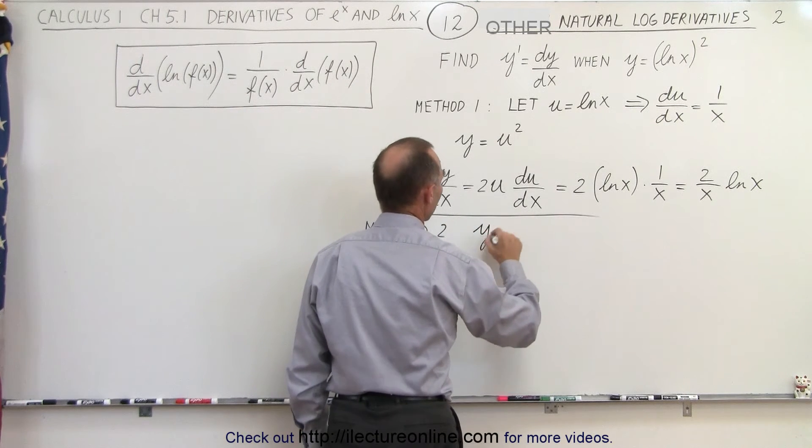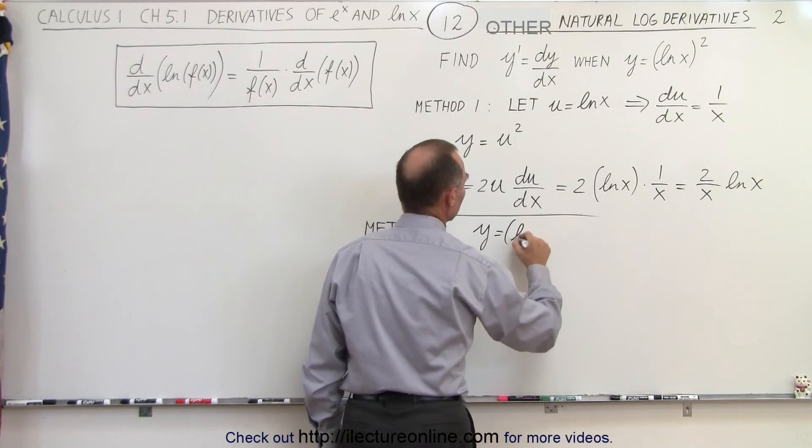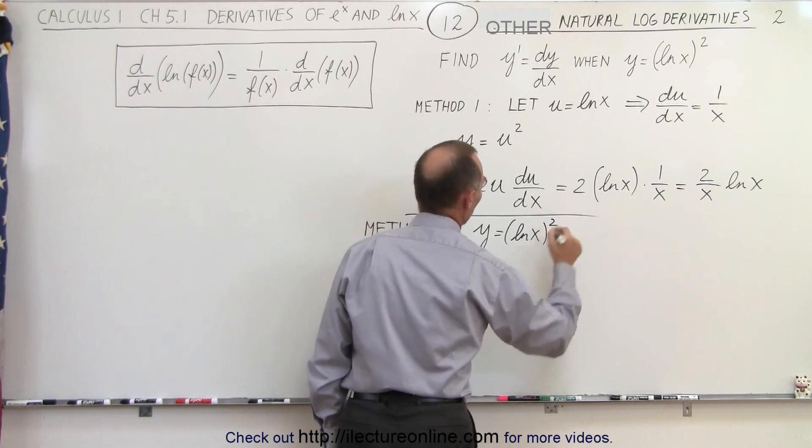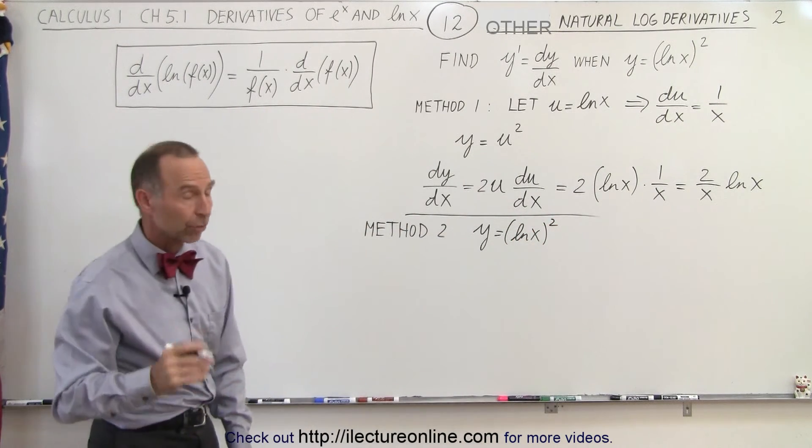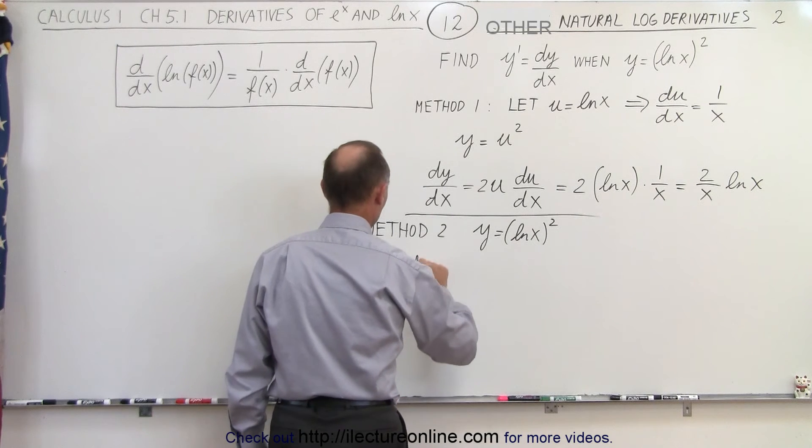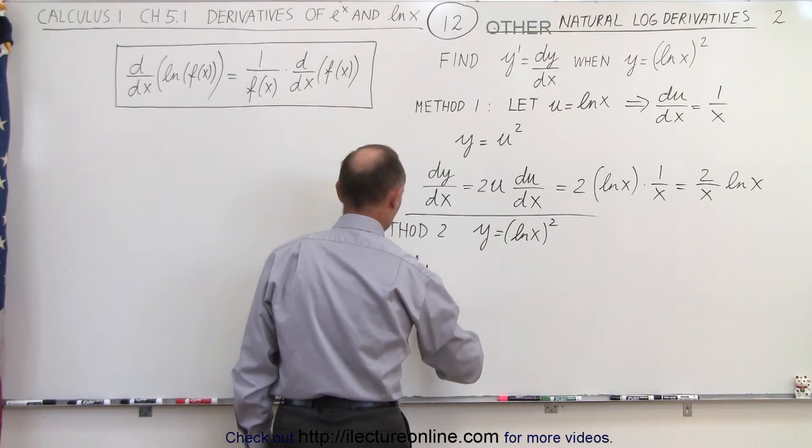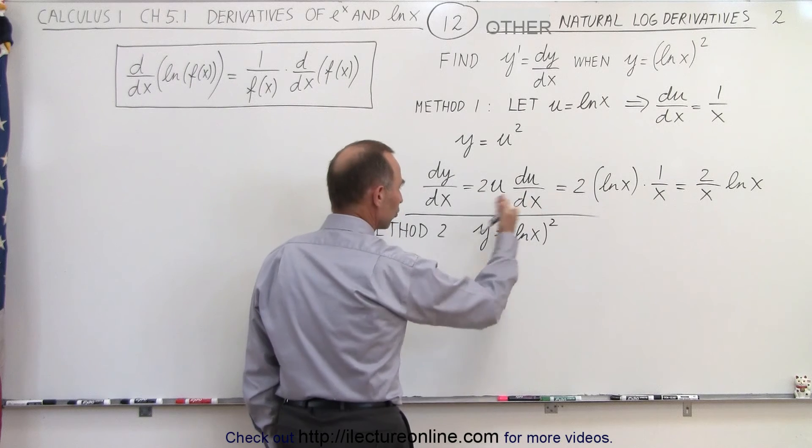We'll start with the function y is equal to the quantity, the natural log, squared. Now we take the derivative of that, so we say dy dx is equal to, using the chain rule,